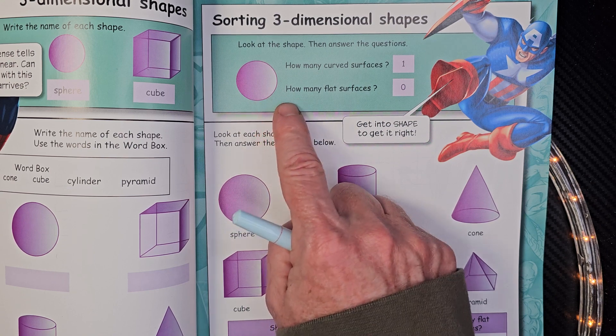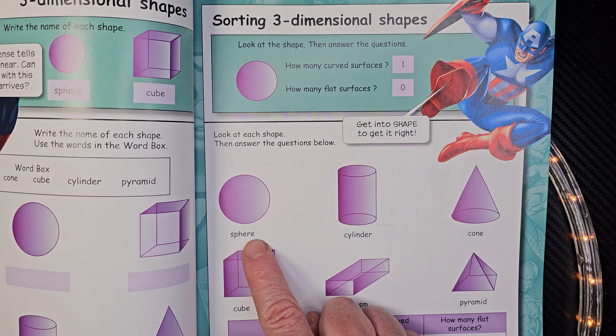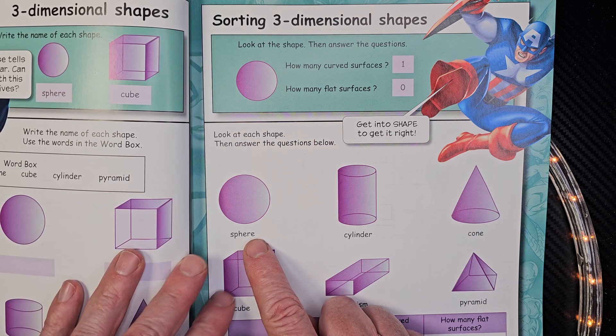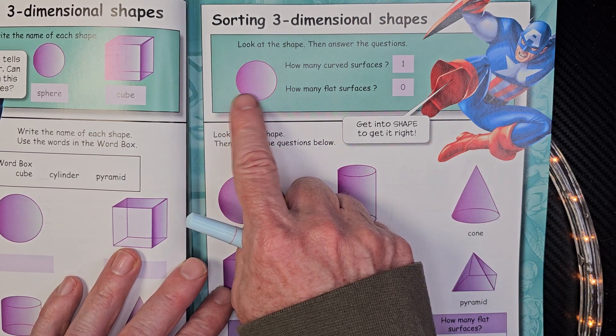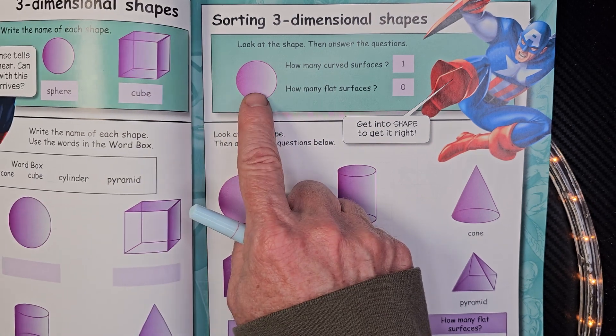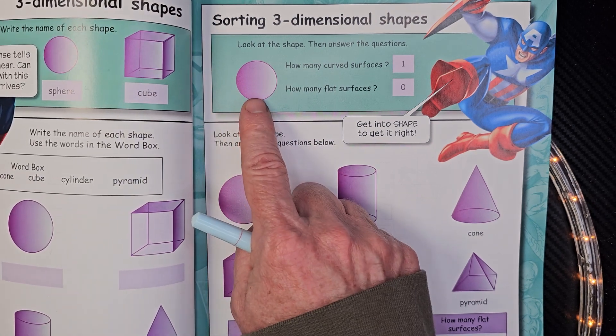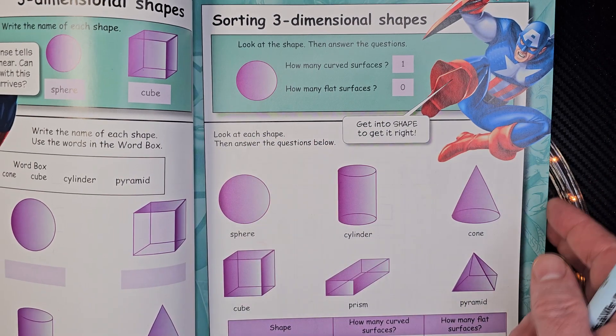Alright, can you say sphere? When you take a look right here, it's sphere. I think it's kind of tricky, so if you look at that as a circle, you're like, well, it does have a flat surface. No, a sphere is like a ball. You can't set anything on top of it, otherwise it rolls right off.